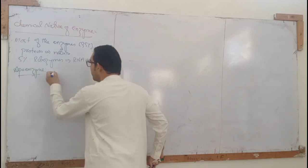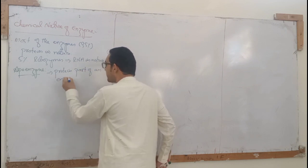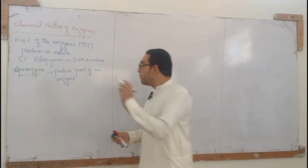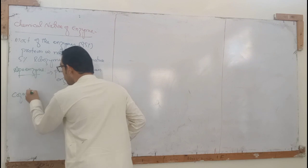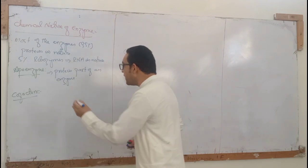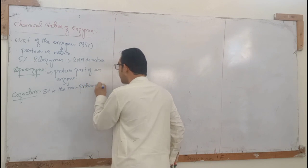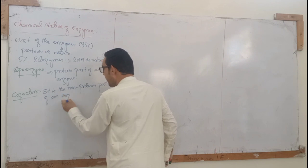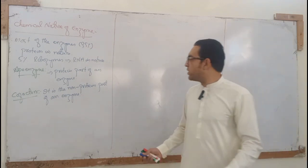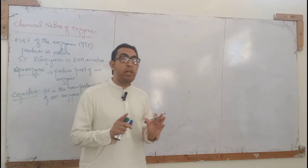This non-protein part is an essential part of the enzyme. The protein part of the enzyme is called the apoenzyme. The non-protein part is called the cofactor. Enzymes cannot catalyze chemical reactions until the non-protein part is attached to the protein part.